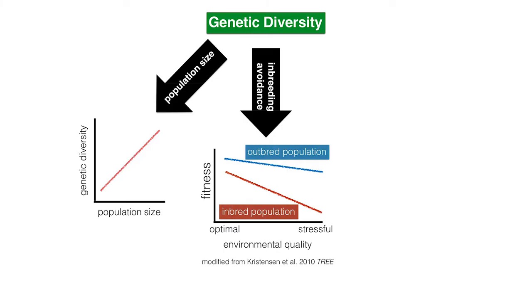Some people have proposed that when you have an outbred population — a big population where individuals are not mating with their relatives — compared to an inbred population where it's small and individuals mate with relatives, in an optimal environment it doesn't matter that much. But when the environment becomes stressful, you accentuate the effects of inbreeding. If you're in a stressful environment and it's an inbred population, the individuals will be less likely to survive and reproduce, whereas the outbred population might be more resilient.